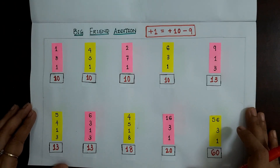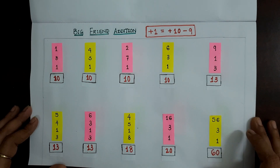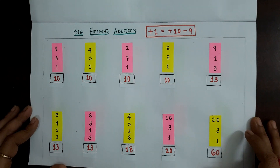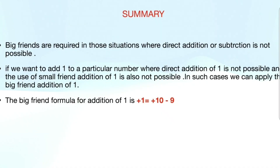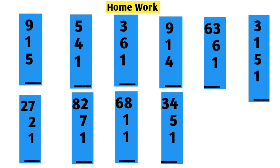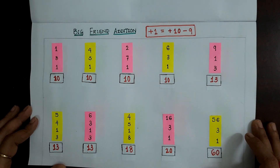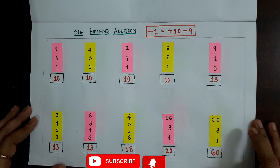This is how we solve the big friend addition of 1. We have done all 10 examples based on the formula plus 1 equals plus 10 minus 9. In the next video, we will be learning one more big friend addition formula. Till then, practice these 10 examples. This is the summary of this video and this is the homework for you. If you find this video helpful, please like, share, and subscribe to my channel, and don't forget to hit the bell icon to get all notifications of my latest videos. Thank you everyone for watching.